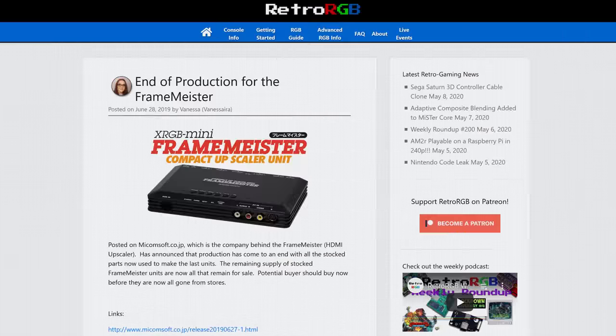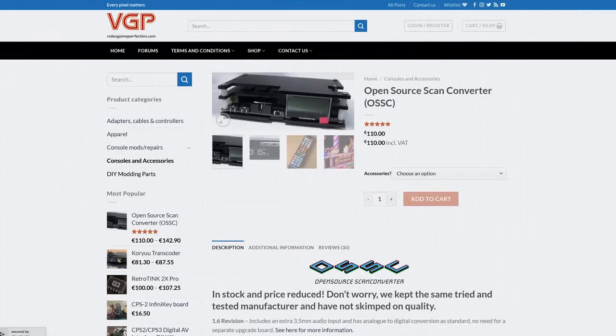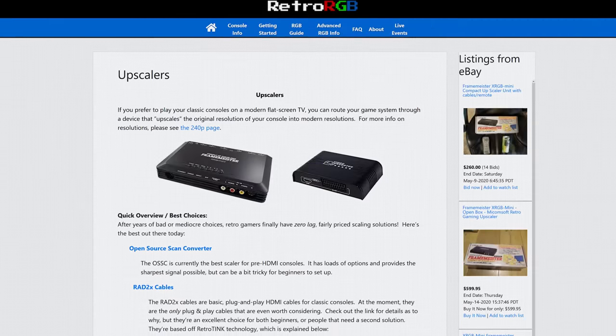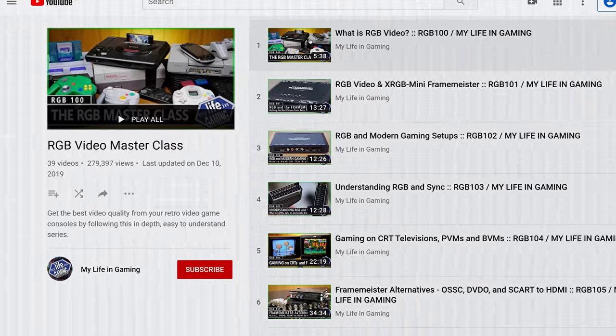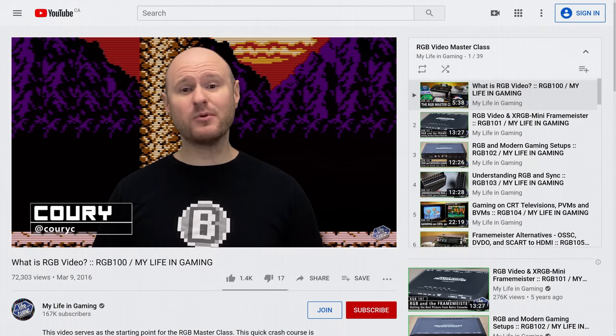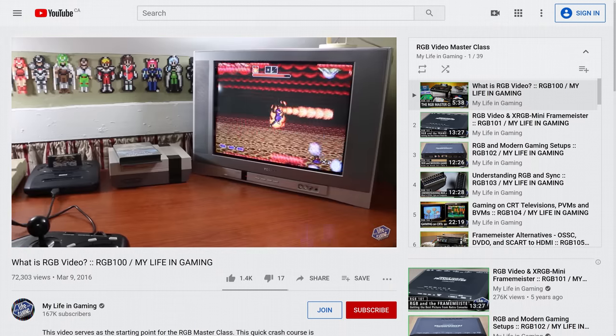But if you really want those sharp pixels, I have good news. There are a lot of options, like the RetroTINK 2X, Framemeister, or Open Source Scan Converter. But before you buy anything, I recommend you check out this great RGB video explainer series from my life in gaming, because this stuff can get really complicated.